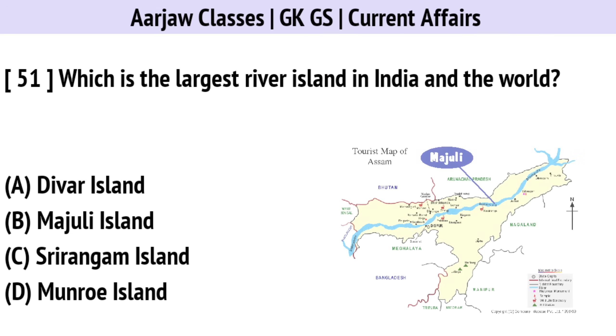Which is the largest river island in India and the world? The correct option is B — Majuli.